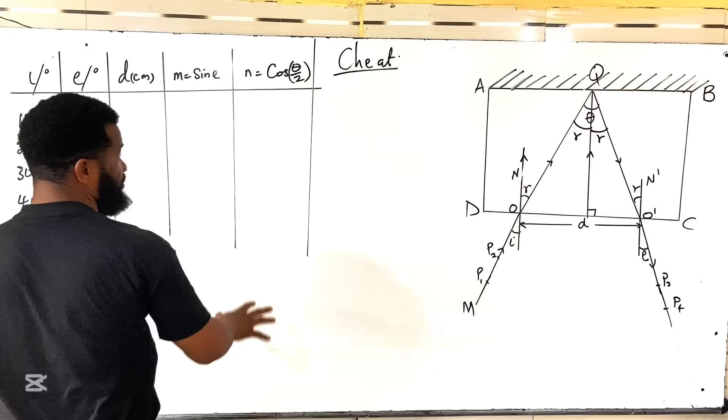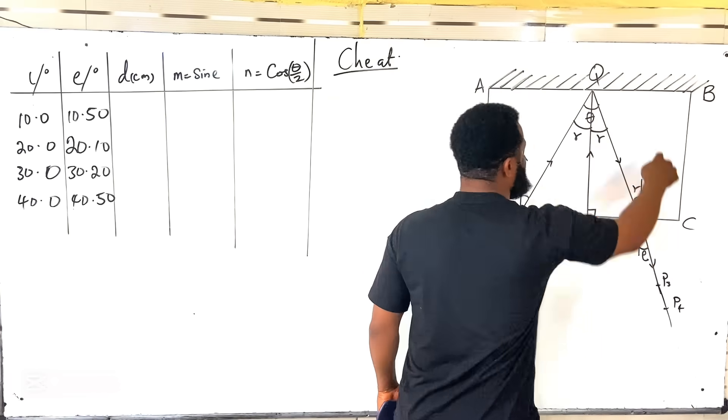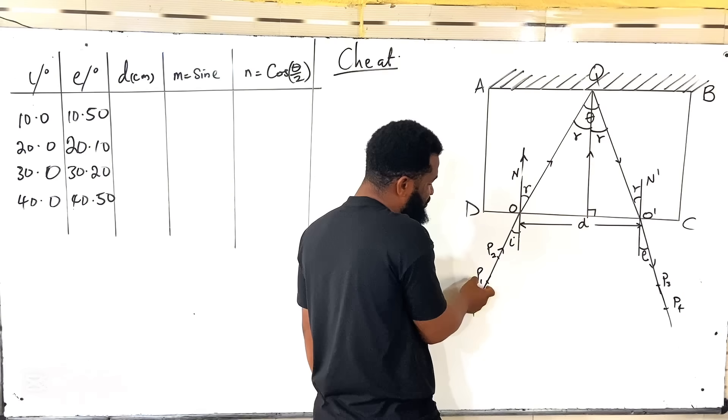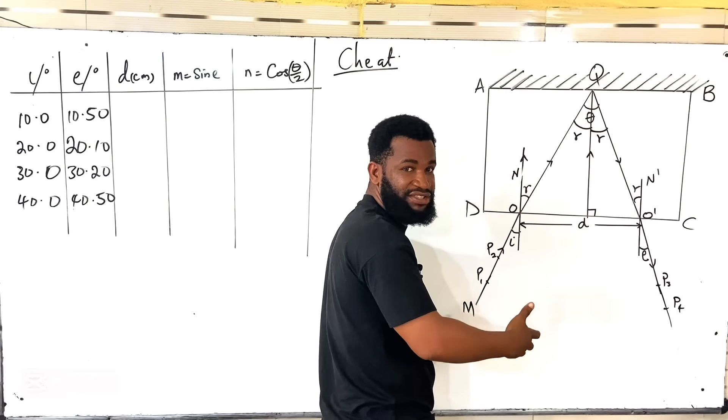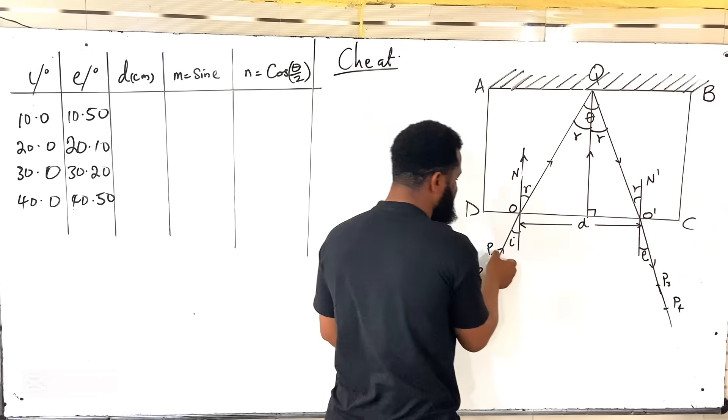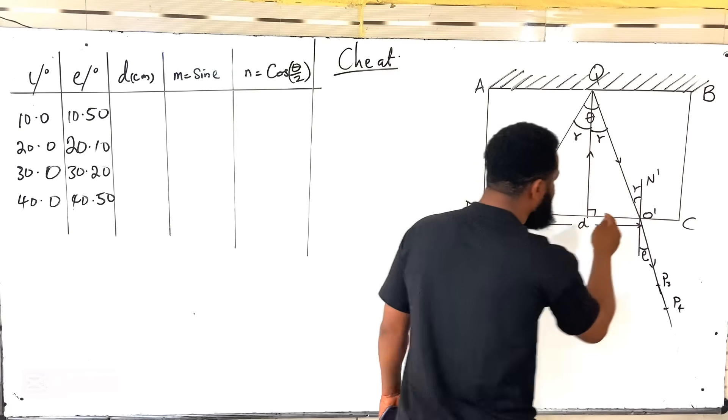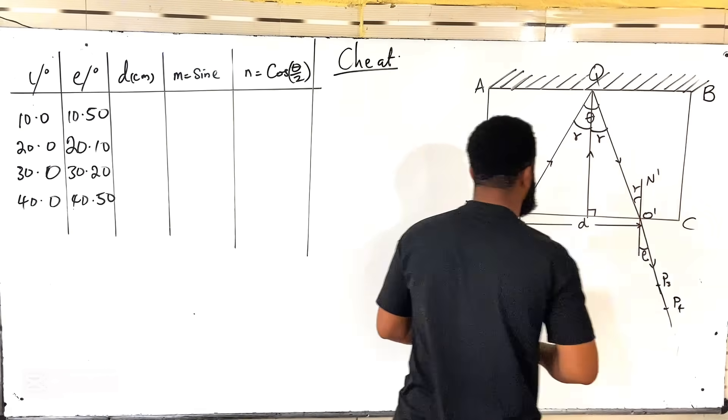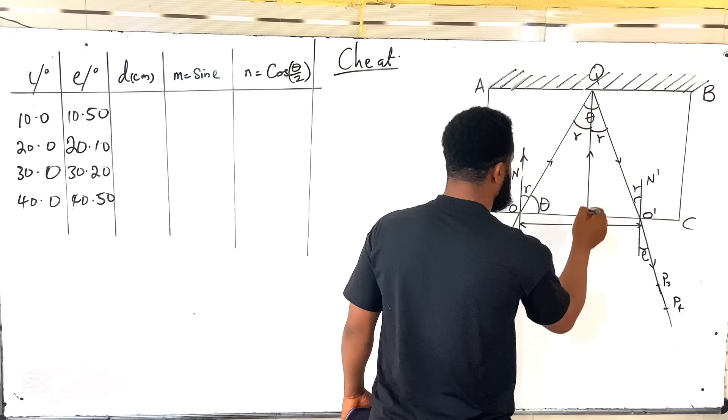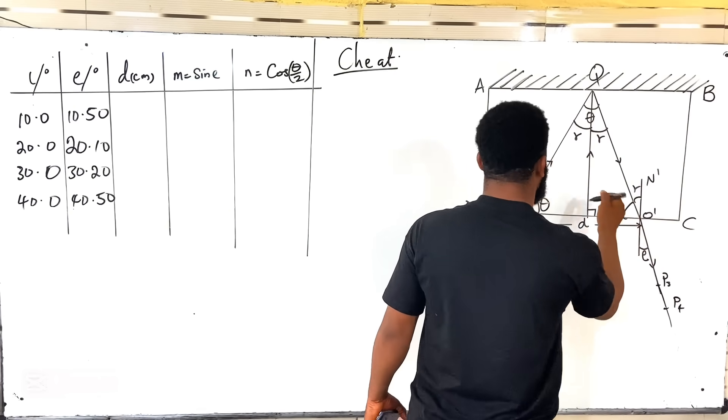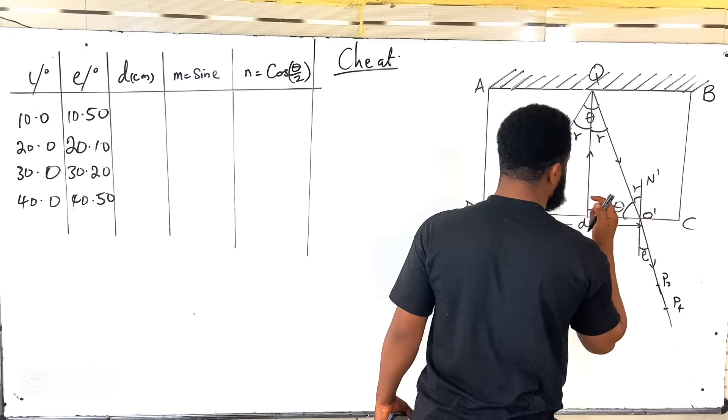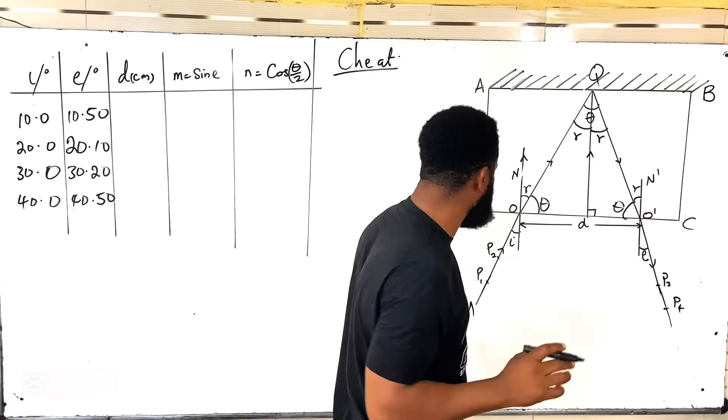Remember, whenever you are done with your table of values, you're also going to draw all these things, pierce your pin, pierce your paper in order to get all these as if you did it. This is the emergent ray, and this is the incident ray. This is the angle of refraction. The question is, how do you now get this angle? Remember this angle is theta, and this angle is also theta. So this triangle O, Q, O prime, they are isosceles triangles.